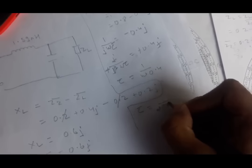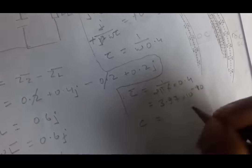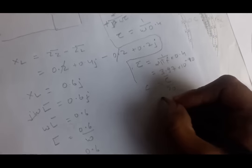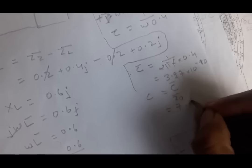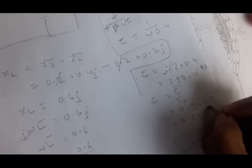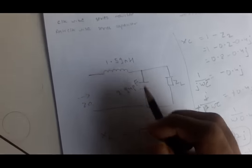C̄ = 1 / (2π × 1×10⁹ × 0.4) ≈ 3.97×10⁻¹⁰. For capacitance, the actual value is C = C̄ / Z0 (divide by Z0, unlike inductance where you multiply). Therefore C ≈ 3.97×10⁻¹⁰ / 50 ≈ 7.94×10⁻¹² F, which equals 7.94 picofarad.